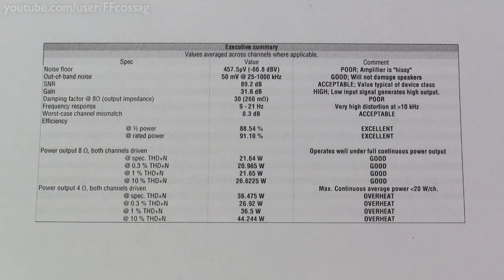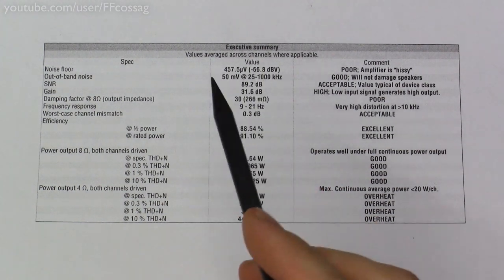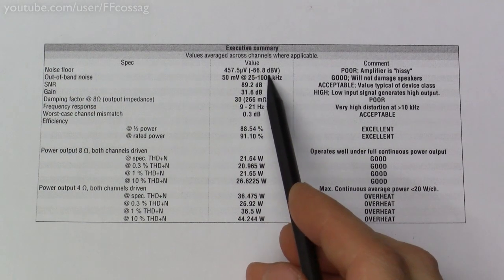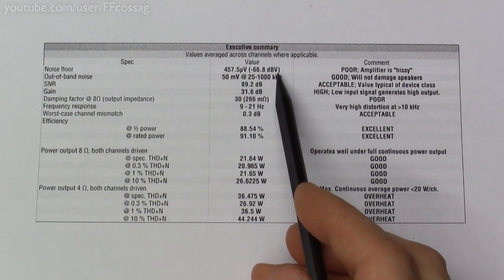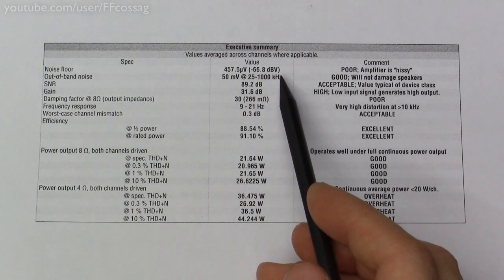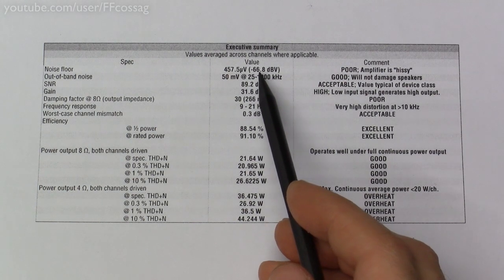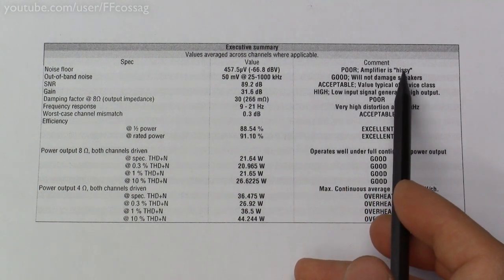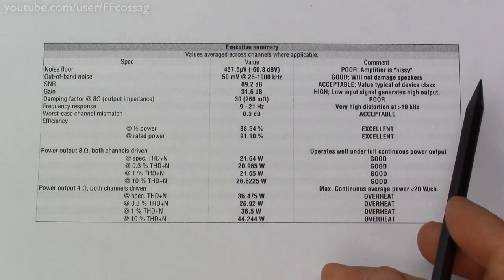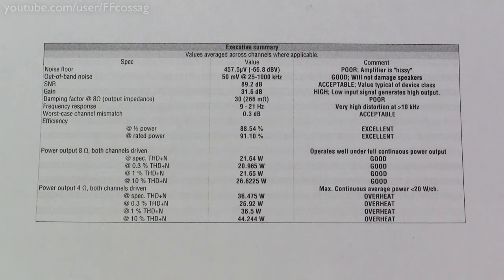And here are the test results for the Breeze Audio TPA3116 amplifier, as powered by a 90 watt, 19 volt laptop power adapter. So, we have a noise floor of about minus 66, 67 decibel volts, which is not very good. It's about on par with the ever famous Lepai, and quite typical for this class of amplifier. A proper hi-fi amplifier would be about 10 decibels quieter, so this is a relatively hissy amplifier, but for most people who aren't too picky or sit a bit away from the speakers, it isn't going to be of any consideration whatsoever. It's a perfectly acceptable result.